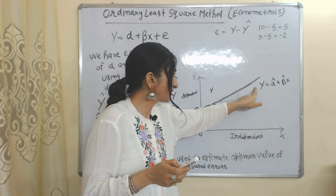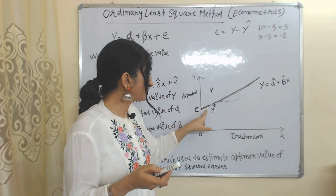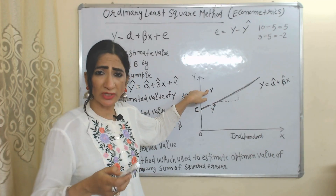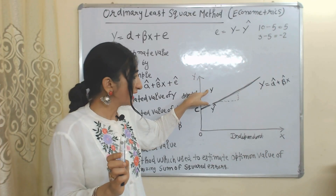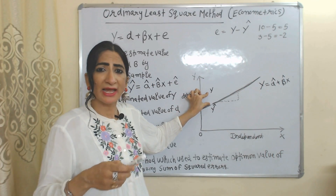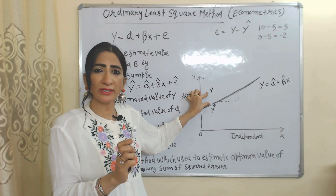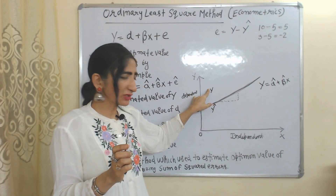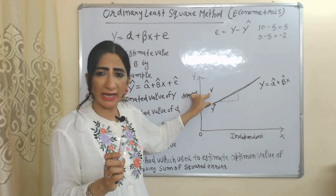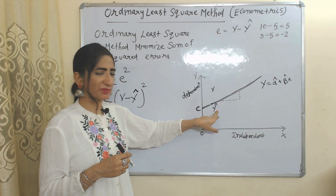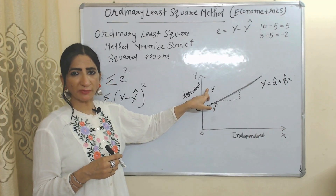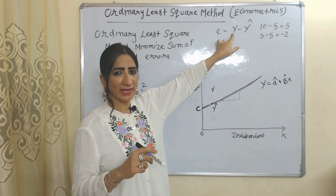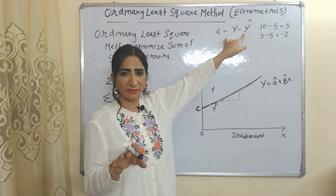This is the estimated regression line. Suppose the value of Y-hat lies somewhere here, and these are the actual observed values of Y. The difference between the estimated value of Y and the actual observed value of Y will be called error. So, error equals Y minus Y-hat, where Y is the actual observed value and Y-hat is the estimated value.